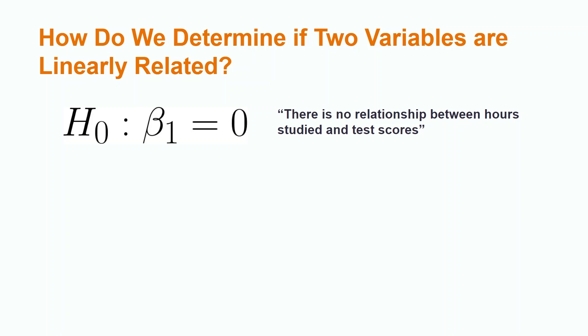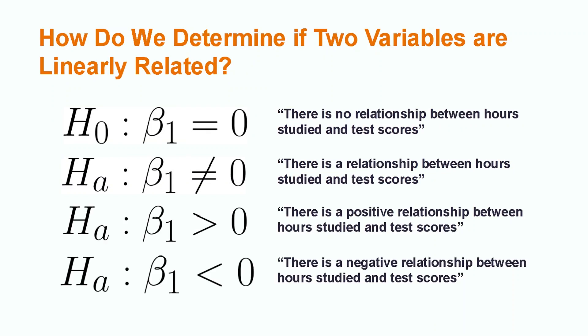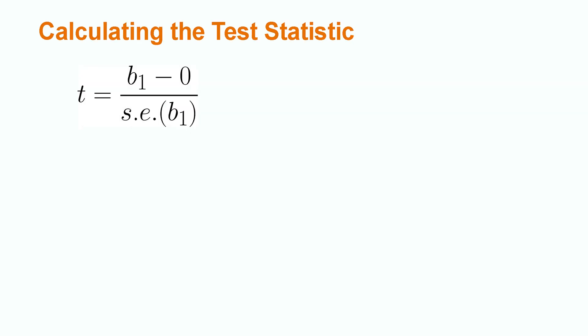An example of a null hypothesis for the population slope would be: there is no relationship between hours studied and test scores. The alternative hypothesis in a test for the population slope can be two-tailed, right-tailed, or left-tailed. A two-tailed hypothesis is written as beta1 does not equal zero, for example: there is a relationship between hours studied and test scores. A right-tailed hypothesis is written as beta1 is greater than zero, meaning there is a positive relationship between studying and test scores. A left-tailed hypothesis is written as beta1 is less than zero, meaning there is a negative relationship between studying and test scores.